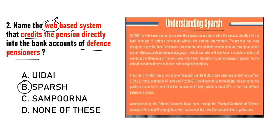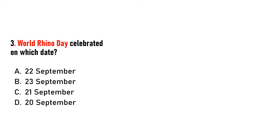SPARSH kya hai? Ek web-based system hai jisme pension defense pensioners ke directly account mein chali jaati hai bina kisi external intermediary ke — beech mein koi role nahi rehta. Is mein lagbhag 11,600 crore rupaye disburse hue hain 2021-22 mein, aur isme increase aa raha hai. Isko administer karta hai Defense Accounts Department.